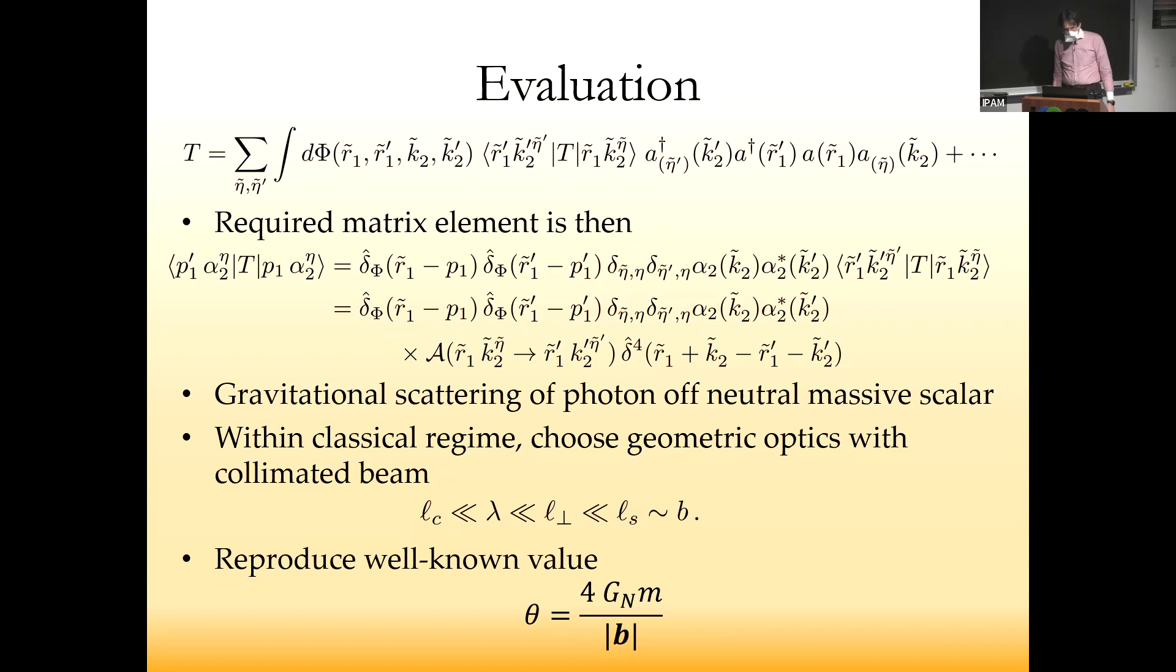That's a straightforward calculation. Within the classical regime, you can choose to do this in geometric optics, which implies certain additional inequalities between the wavelength, the perpendicular beam size, and the impact parameter. When you turn the crank, to no one's surprise, you recover the very well-known value from 106 years ago.